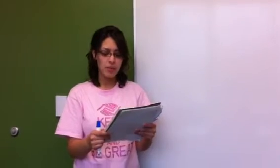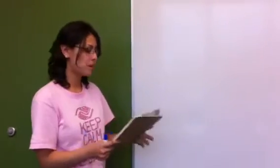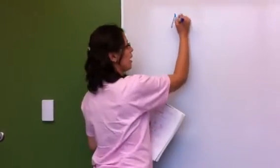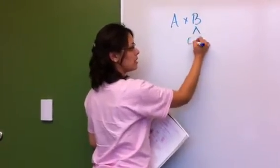The distributive property is breaking big numbers into smaller numbers with addition to make them easier to multiply. So if you wanted to do A times B, you could split up B into C plus D.